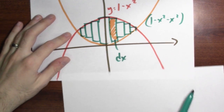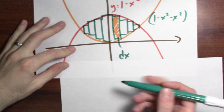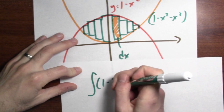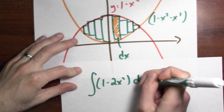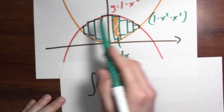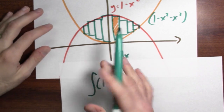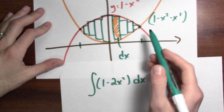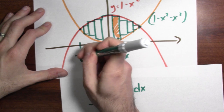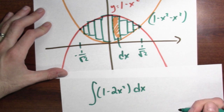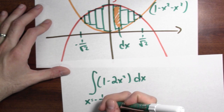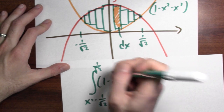Now I can write down the integral. I know the height and the width of these rectangles, so I want to integrate the height — 1 minus 2x squared — times the width dx. But I need to determine where to integrate. What are the possible x values in this region? If we think about exactly where these two curves cross, the x coordinate where the curves cross is minus 1 over the square root of 2 and 1 over the square root of 2. So I'm going to integrate from x equals negative 1 over the square root of 2 up to 1 over the square root of 2.